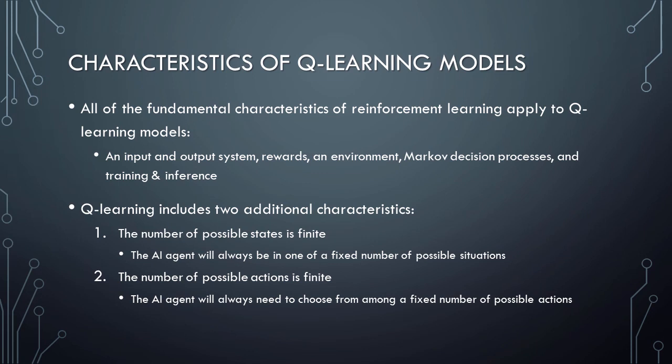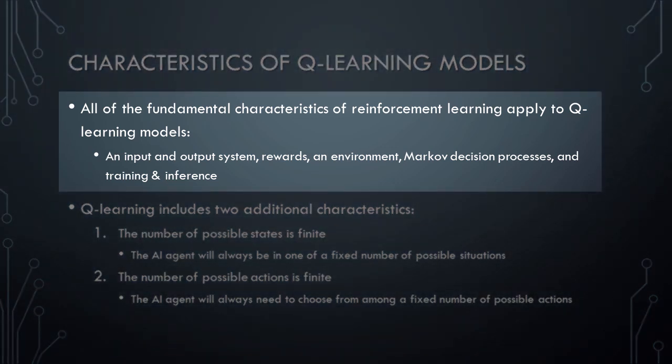Now that we have a basic understanding of what Q-Learning is, let's briefly discuss the characteristics of Q-Learning models. First, since Q-Learning is a type of reinforcement learning, all of the fundamental characteristics of reinforcement learning models also apply to Q-Learning models. Thus, Q-Learning models have an input and an output system, rewards, an environment, they operate on the basis of a Markov decision process, and they have a training mode and an inference mode.